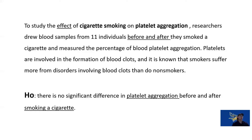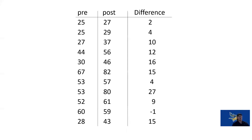Here's an example: to study the effect of cigarette smoking on platelet aggregation, researchers drew blood from 11 individuals before and after they smoked a cigarette and measured the percentage of blood platelet aggregation. Platelets are involved in blood clot formation, and smokers are known to suffer more disorders involving blood clots than non-smokers. The null hypothesis is there's no significant difference in platelet aggregation before and after smoking. We take pre and post measures, find the difference for each pair, and then take the mean of those differences for our dependent t-test.